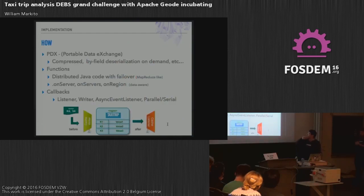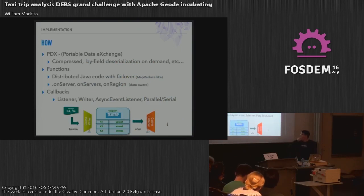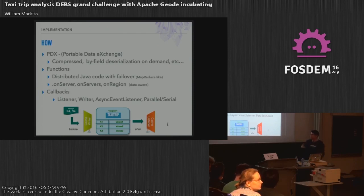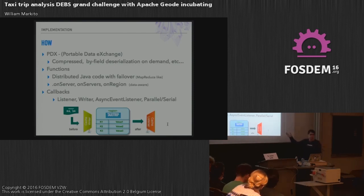So how did we actually implement the challenge? We are leveraging three main parts of Geo. One is PDX, which is our serialization mechanism. The second is the idea of functions, which is our way to deploy Java code and have it executed in a cluster in a distributed way with failover and everything.